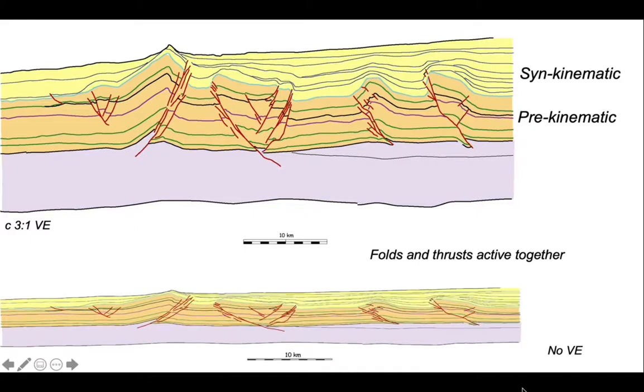Let's display this without vertical exaggeration so that it shows more appropriately the structures. And we can see thrust structures in there moderately inclined, attaching from a basal purple layer which is the shale that underlies the succession.